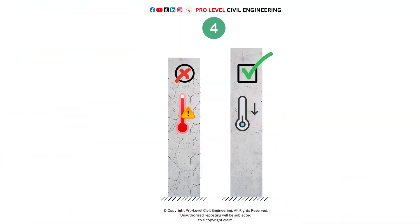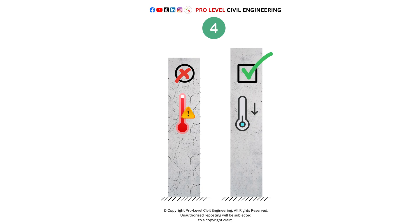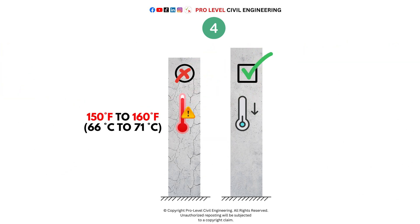4. Reducing the temperature of the concrete — creep increases with higher temperatures, meaning that as the temperature rises, concrete tends to deform more over time under sustained loads. The highest creep occurs when the concrete is exposed to temperatures around 150 to 160 degrees Fahrenheit, or 66 to 71 degrees Celsius.